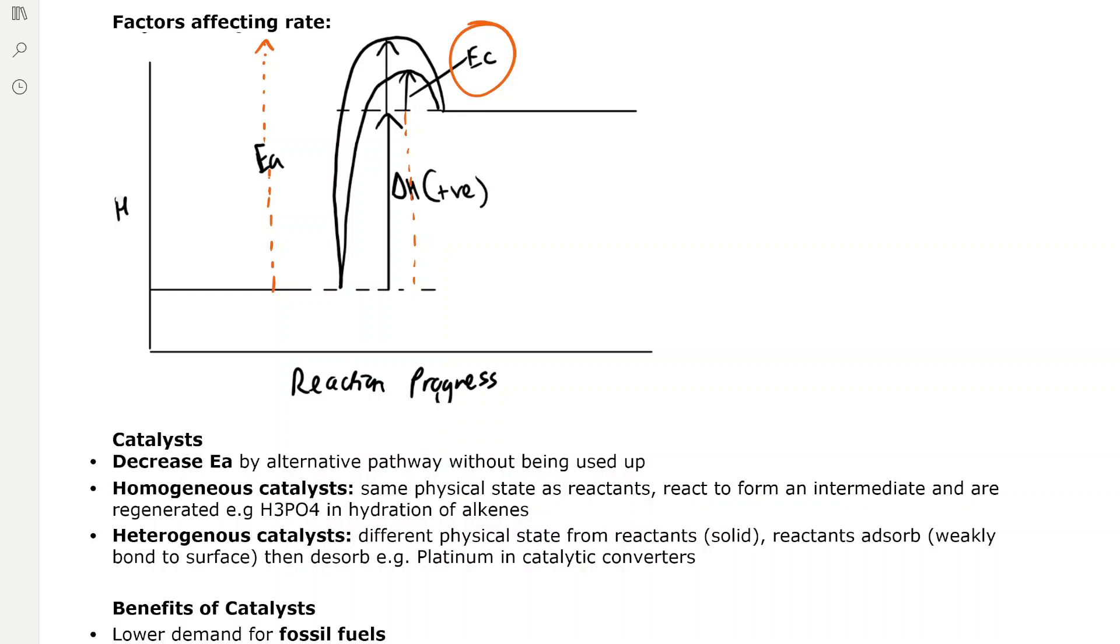And then we have heterogeneous catalysts, which have a different physical state from the reactants, and they're usually solid, and the reactants adsorb, which means they weakly bond to the surface of the catalyst, then they desorb. For example, platinum in catalytic converters is a heterogeneous catalyst, because nitrogen monoxide and carbon monoxide adsorb to the surface of the catalyst, react to form nitrogen and carbon dioxide, and then desorb, so leave the surface of the catalyst.